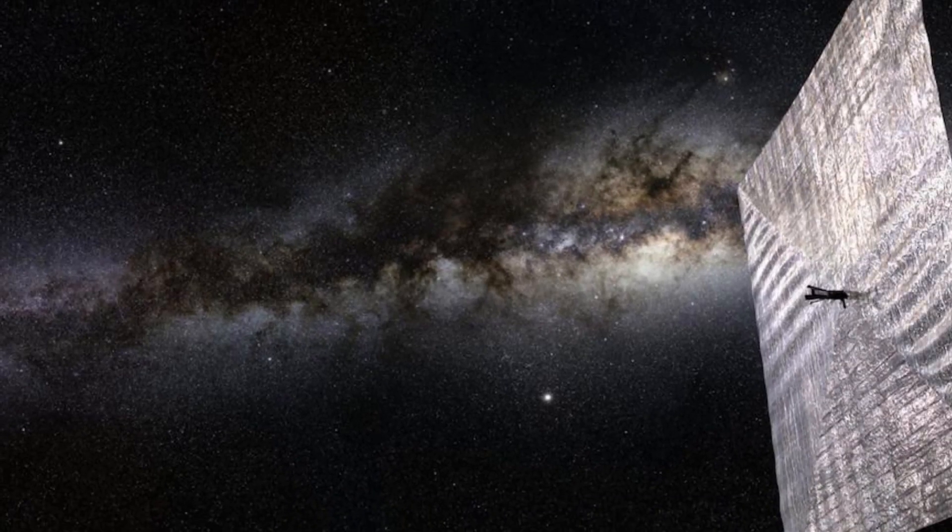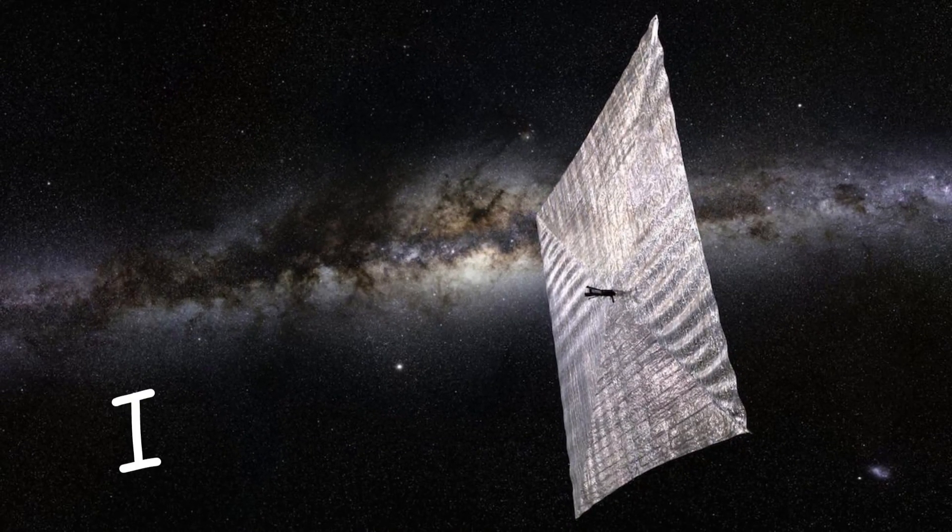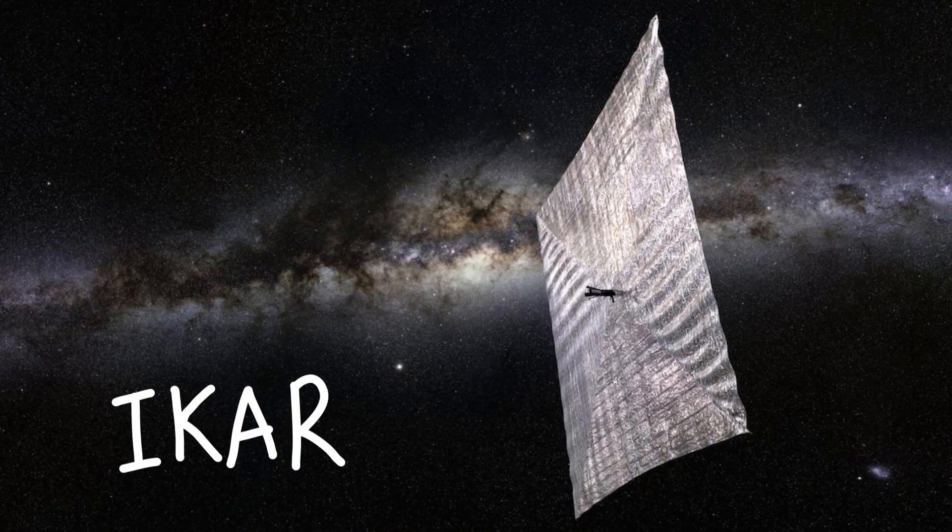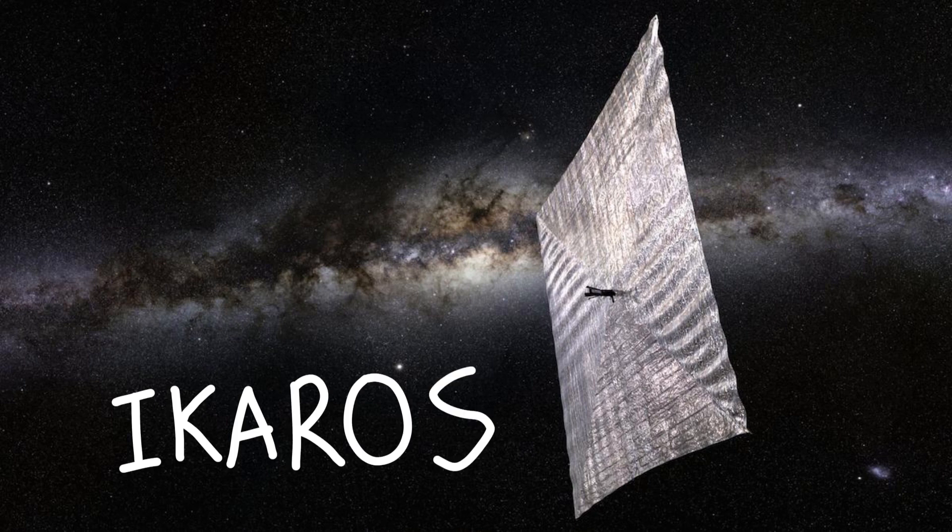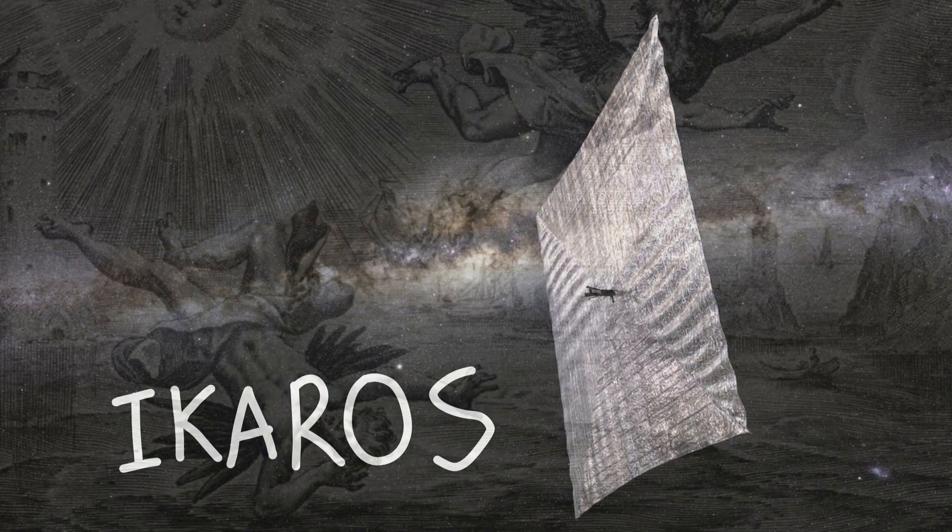They sent a solar sail into space named the Interplanetary Kitecraft Accelerated by Radiation of the Sun, or Icarus. Japan, that's pretty dark.